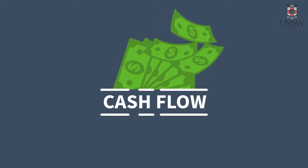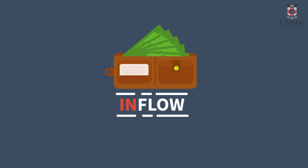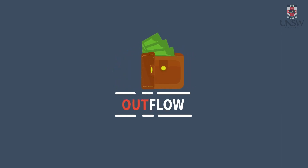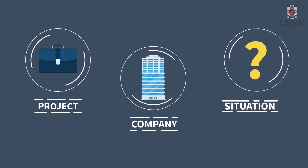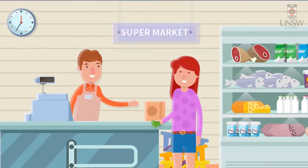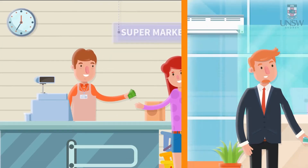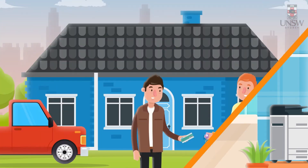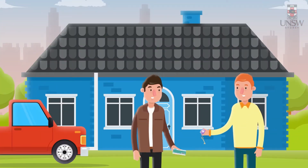What is a cash flow? A cash flow is a cash movement in or out of a project, company or situation. For example, Jinxia pays a bill. Eric cashes in a check. Benjamin settles on the purchase of a house.